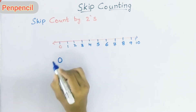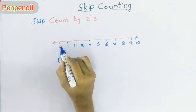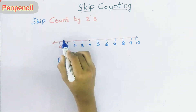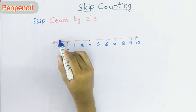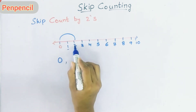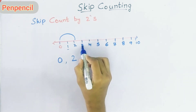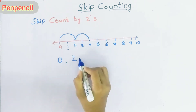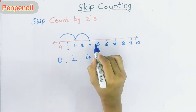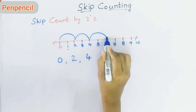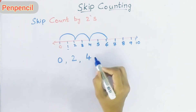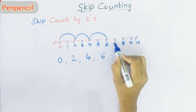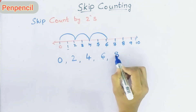Now how should we do skip counting by twos? The first number is zero. The name itself tells you — skip! So you have to skip one number. Zero — we skip one — and the next number is two. Again you skip one number, so next is four. Skip one more, and next number is six.